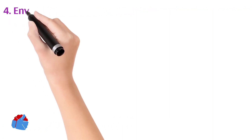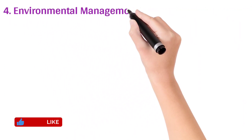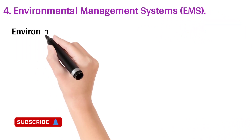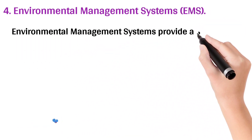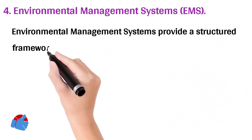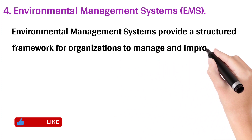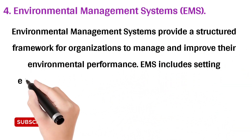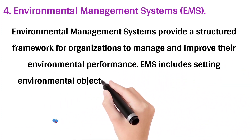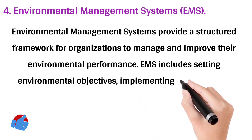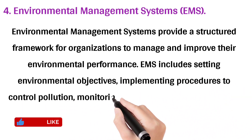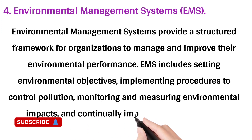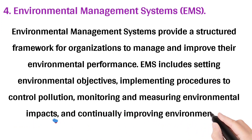4. Environmental Management Systems (EMS): Environmental Management Systems provide a structured framework for organizations to manage and improve their environmental performance. EMS includes setting environmental objectives, implementing procedures to control pollution, monitoring and measuring environmental impacts, and continually improving environmental practices.